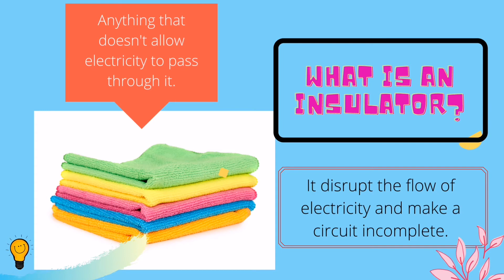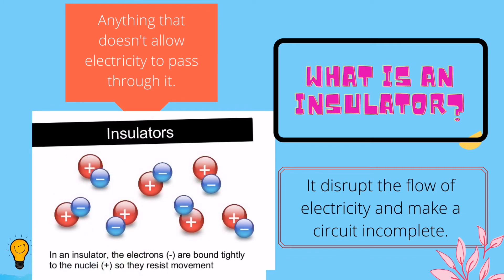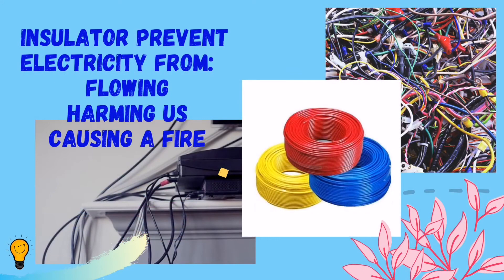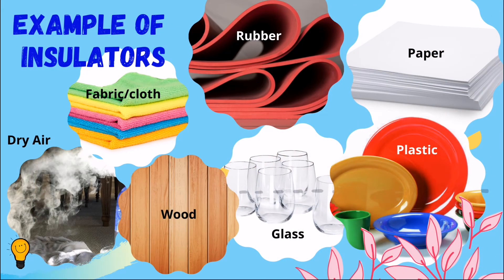The opposite of a conductor is called an insulator. An insulator is anything that doesn't allow electricity to pass through it. Insulators play an important part in protecting us from electricity. The electrons in insulating materials do not move freely, which disrupts the flow of electricity and makes a circuit incomplete. Insulators are used for separating current-carrying conductors and for supporting electrical equipment, preventing electricity from flowing and harming us or causing a fire.